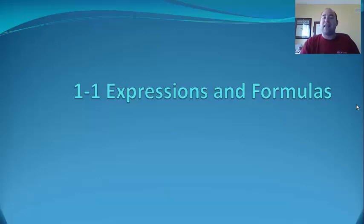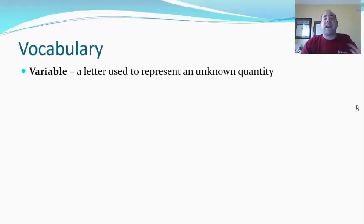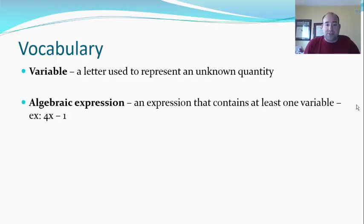So the first word is a variable. Again, we should know what that is by now, we're in Algebra 2, but in case you forgot, it's a letter that represents something that is unknown. Next is an algebraic expression. It's an expression that contains at least one variable. That's what makes it an algebraic expression as opposed to a numeric expression, like 2 plus 3. Here's an example right here: 4x minus 1. Notice what it's missing and what makes it an expression is it doesn't have an equal sign. That would be an equation, and we'll talk more about that later on in Chapter 1.